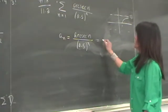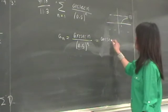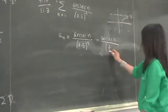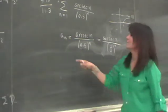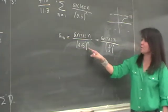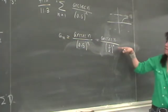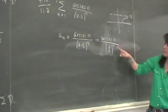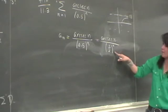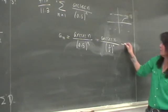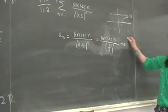So this is arc secant n. We have arc secant n over 0.5 to the n, which we can write as arc secant n over half to the n. If we look at the graph, this goes to pi over 2.